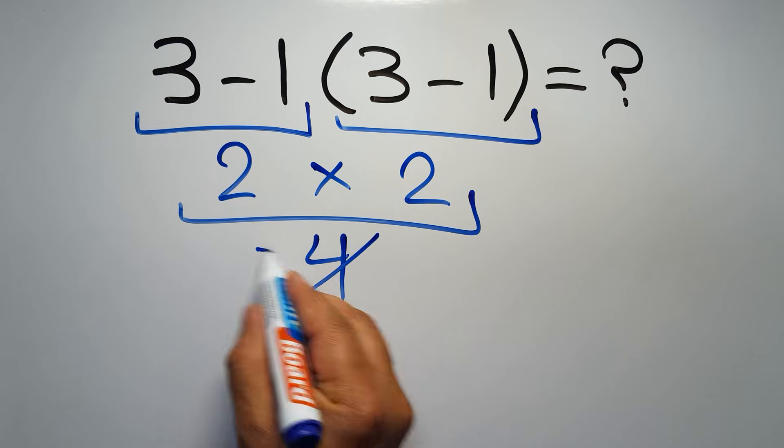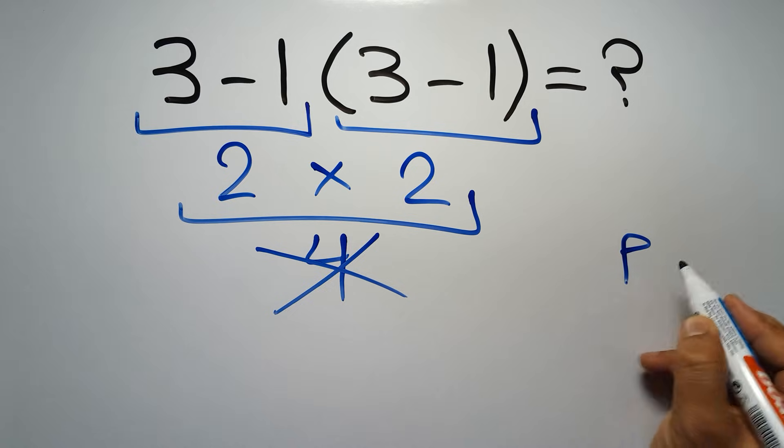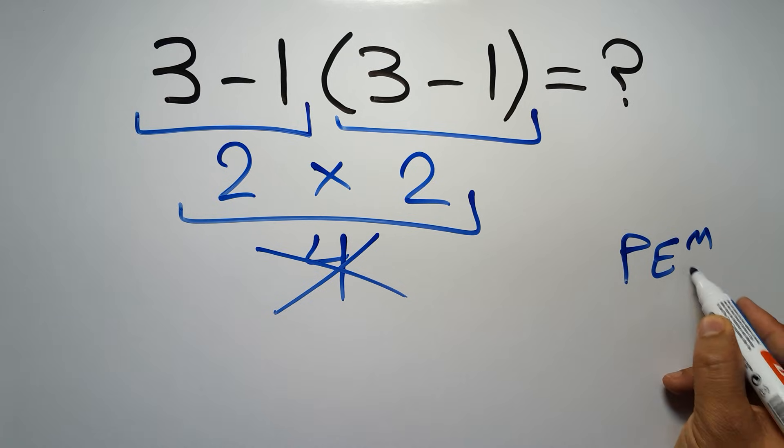But this answer is not correct because according to the order of operations, first we have to do parentheses, then exponents, then multiplication or division, and finally addition or subtraction.